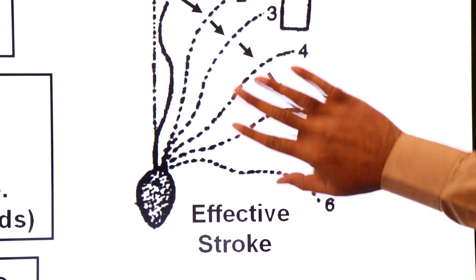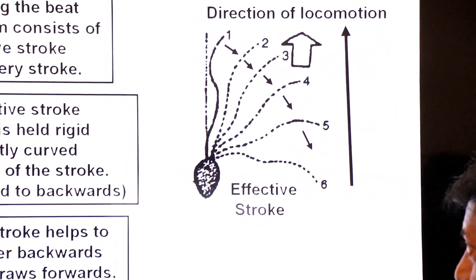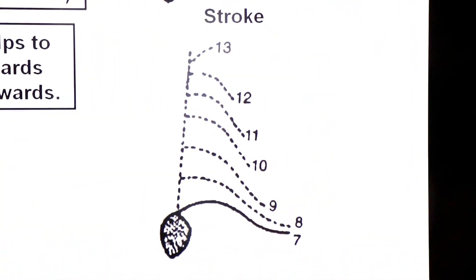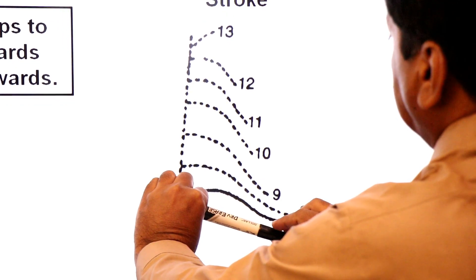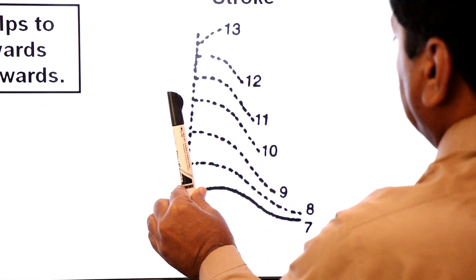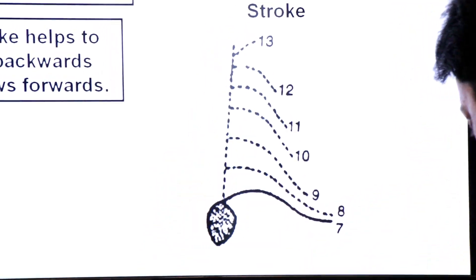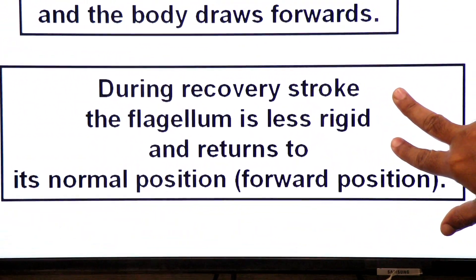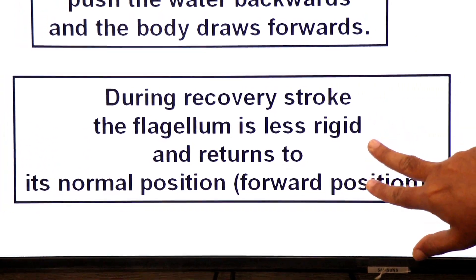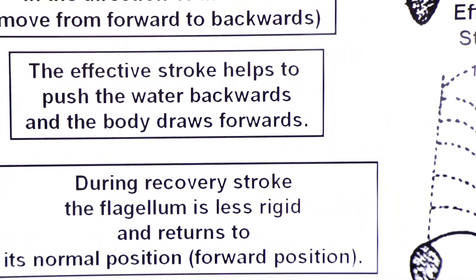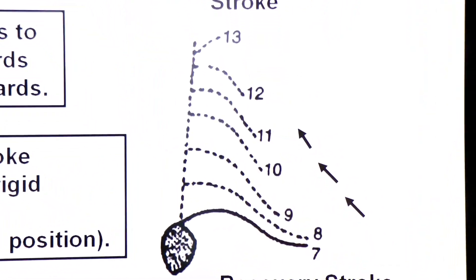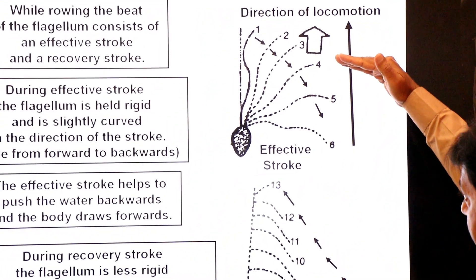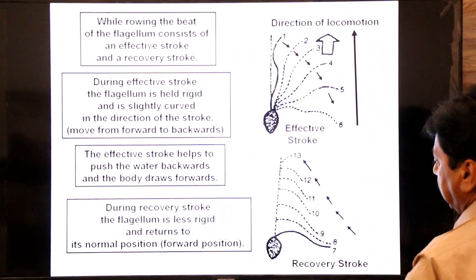The body moves in the opposite direction to the stroke — locomotion is in the opposite direction to the flagellar push. During the recovery stroke, the flagellum is less rigid, soft, and narrow, and it returns to its normal forward position. The effective stroke moves the body forward; the recovery stroke returns the flagellum to its starting position ready for the next effective stroke.